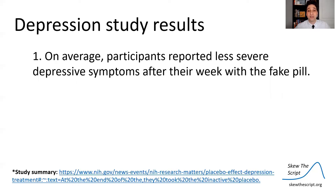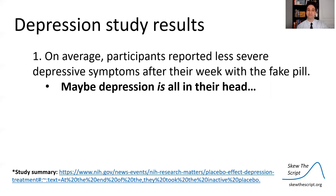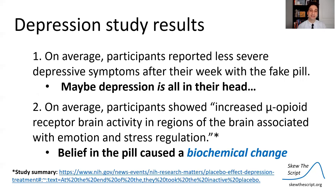The results: on average, participants reported less severe depressed symptoms after their week with the fake pills. So even taking a fake pill led them to report feeling less depressed — suggesting maybe depression is completely psychological. However, here's the interesting part: on average, participants showed increased mu-opioid receptor brain activity in the regions of the brain associated with emotion and stress regulation. So belief in the pill and its active ingredients, even though it wasn't true, caused an actual biochemical change in their brain.